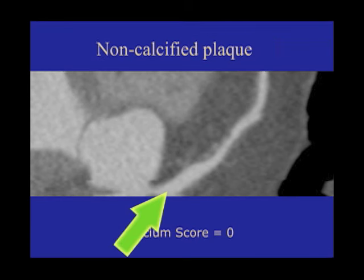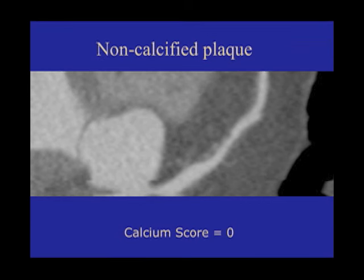The thing you have to be careful about is with coronary calcium — if you're just looking for calcium, not all atherosclerosis is calcified. This is a coronary artery; this is the beginning, and as it comes out it should slowly taper and get smaller. What you're looking for is an abrupt tapering where it gets narrower very quickly. This here is actually some atherosclerosis which is not calcified.